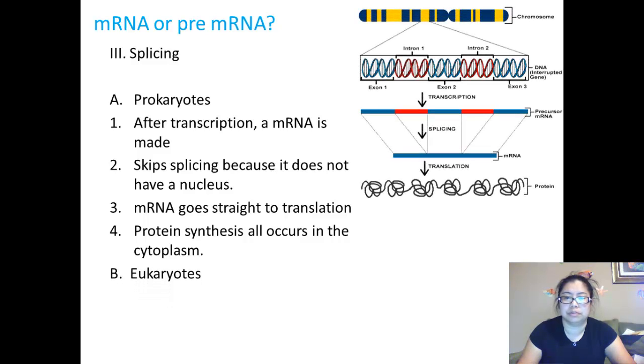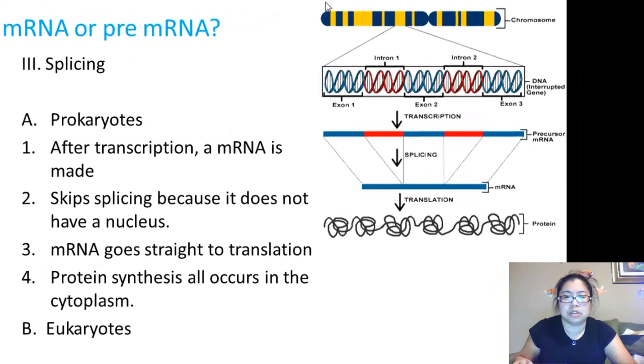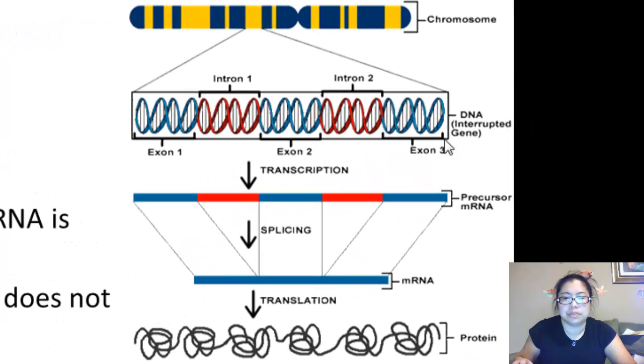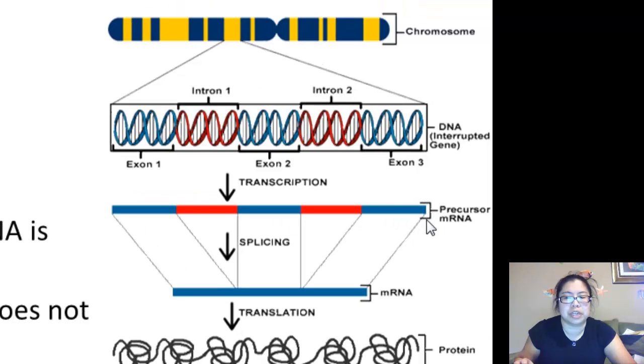However, eukaryotes have a three-step process. Let's review: from a segment of the chromosome, a gene is taken out and unraveled so that it can be transcribed by RNA polymerase into a piece of precursor mRNA. Precursor mRNA, and this is where the pre-mRNA name comes from.